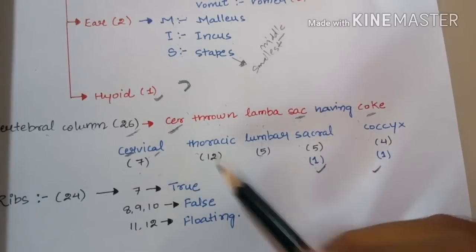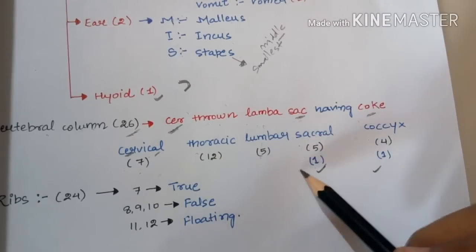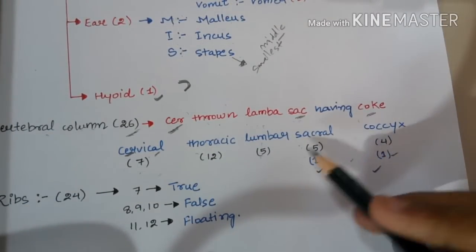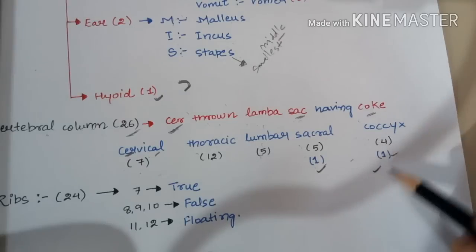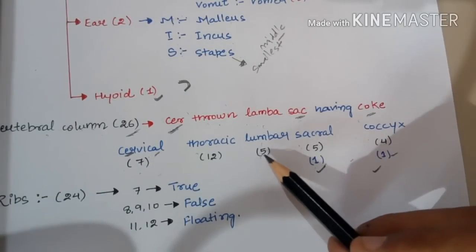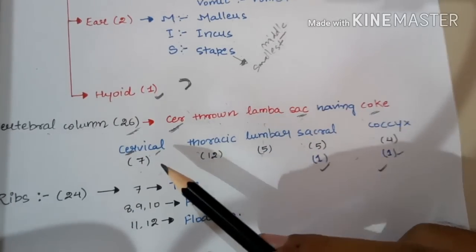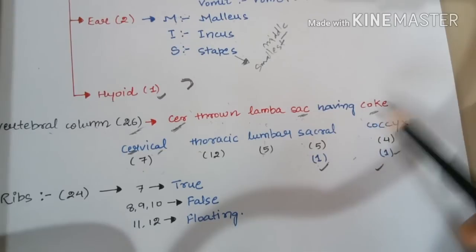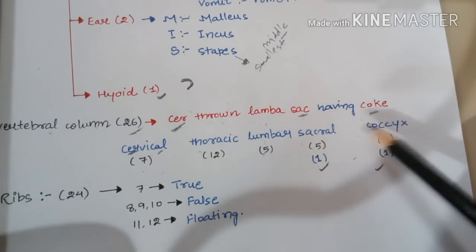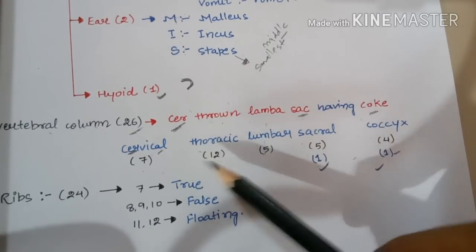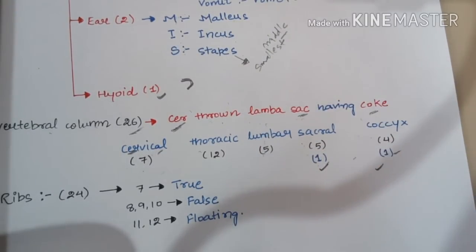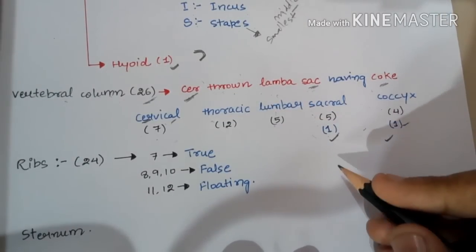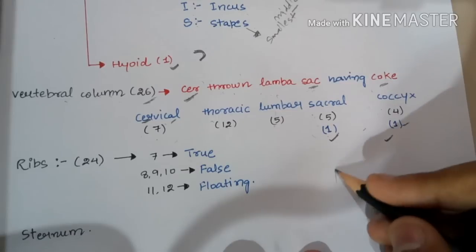So the vertebral column count is: 7 cervical + 12 thoracic = 19, plus 5 lumbar = 24, plus 1 fused sacrum = 25, plus 1 fused coccyx = 26 bones total. The sacral five bones and coccyx four bones are fused, so each is counted as one bone.